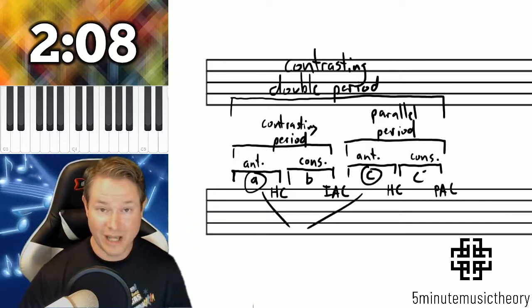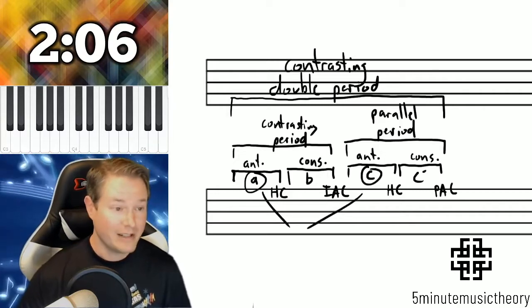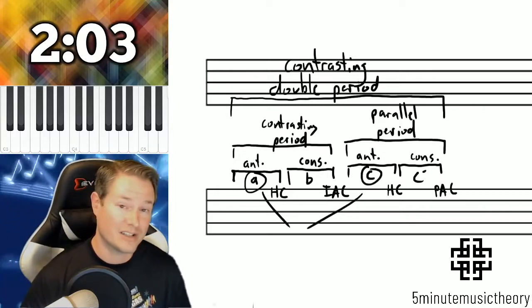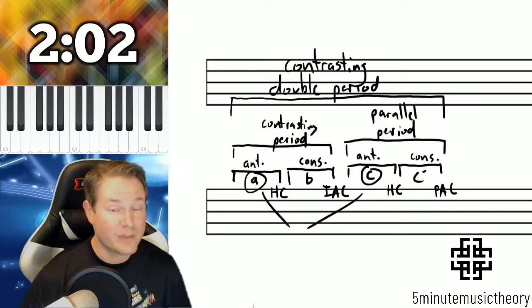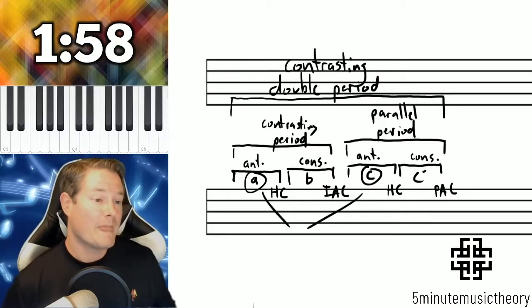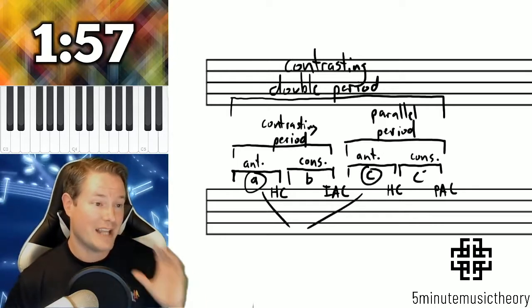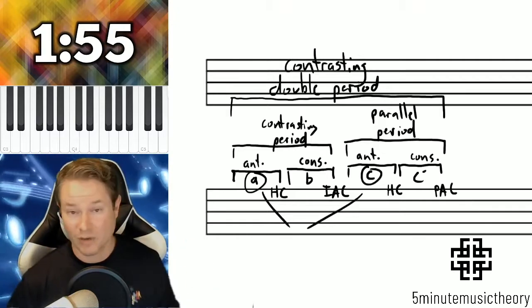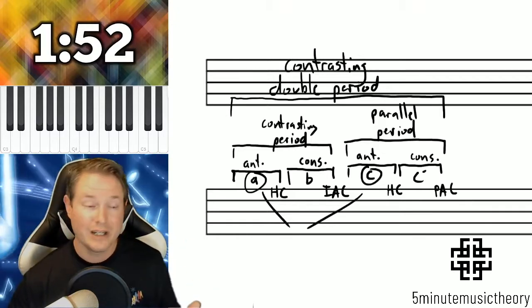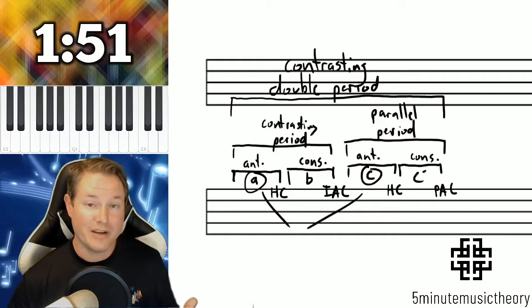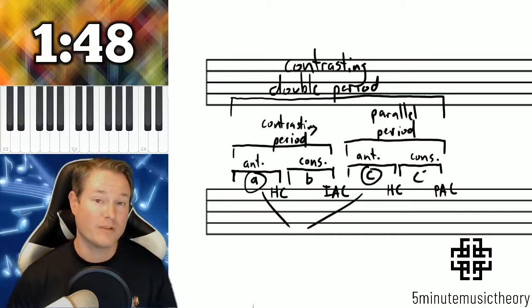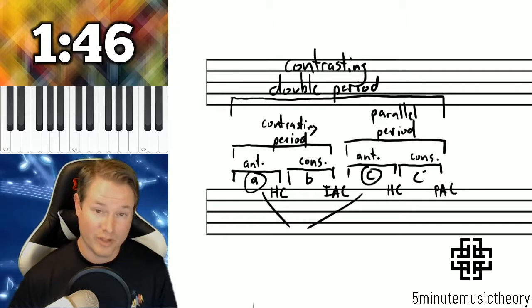If they started with the same material, then it would be parallel. We don't really go past double period — there is such a thing as a three-phrase period and things like that, but I'm just going to go over the basics right now. So we have periods and double periods, and in the next video we're going to cover another really popular and common phrase form. But this is probably the most common form that we run across in tonal music.